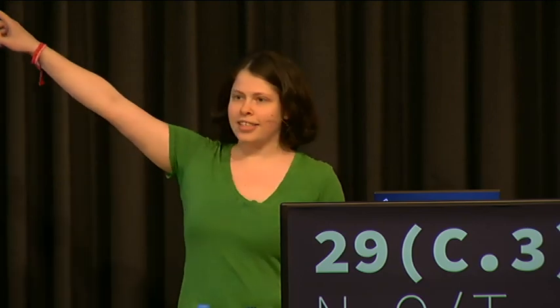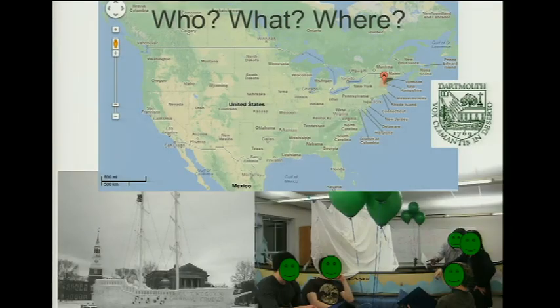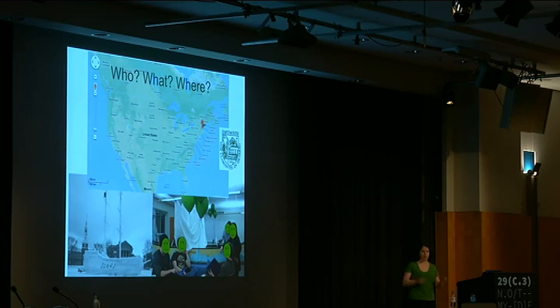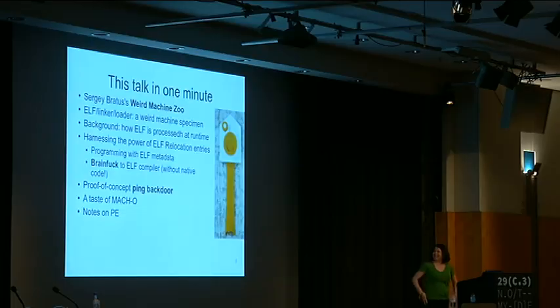I come from Dartmouth College, that's over in New Hampshire — that tiny little state up in red on the map in the US. It snows and sometimes we build ships out of snow, and if it's too cold to be outside to build the ship, we bring one inside our lab and do shippy things. I want to introduce Sergey Bratus' Weird Machine Zoo in case you haven't heard of it before, because this is part of his collection.